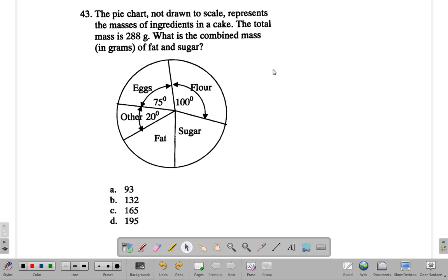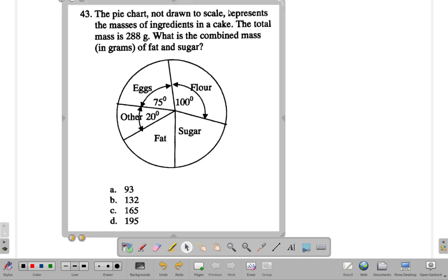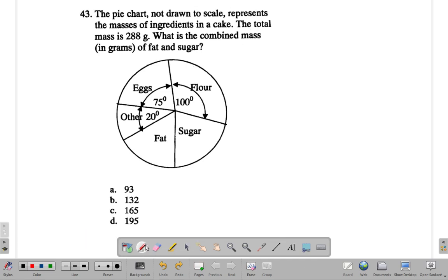The total mass is 288 grams, so that's 288 grams. Now you have 20, 75, and 100 degrees. The total is 360 degrees. Now let's see different ways you can do it.